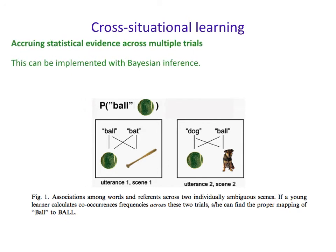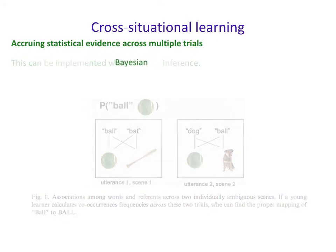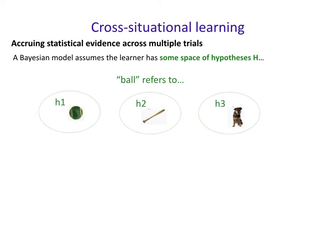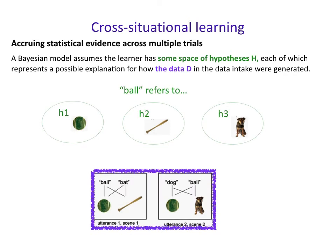This can be implemented with Bayesian inference. A Bayesian model assumes the learner has some space of hypotheses. For example, if we're trying to figure out what the word 'ball' refers to, hypothesis one might be that it refers to the green ball-like object, hypothesis two that it refers to the bat-like object, or hypothesis three that it refers to the dog object. These three hypotheses collectively make up the space H. Each of these is a possible explanation for how the data D — those two scenes in the child's data intake — were generated.